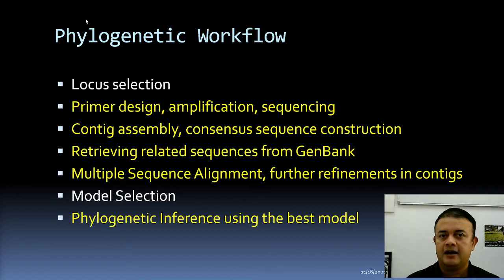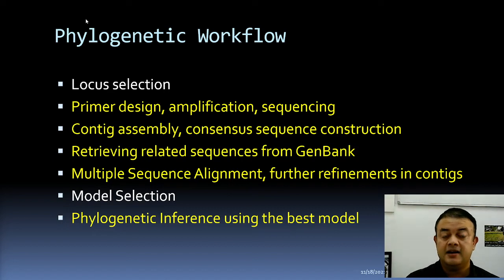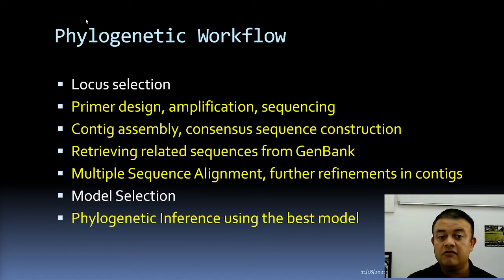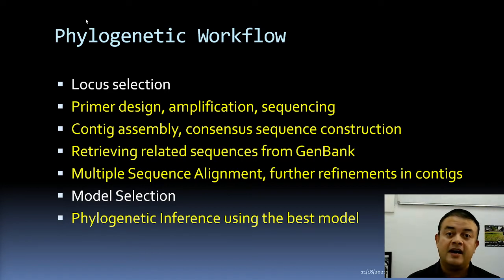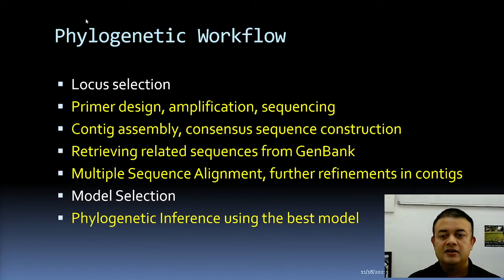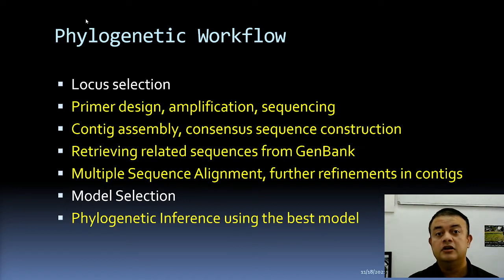Anyone can submit sequences to GenBank, provided they are generated by rigorous empirical methodology. Submission to GenBank is optional, but you can retrieve related sequences from GenBank to construct the phylogenetic tree. Phylogenetic analysis starts with multiple sequence alignment, which we already discussed. You then refine this alignment and refine the contig if assembly is problematic, until you have the final alignment ready as input for the real analysis.